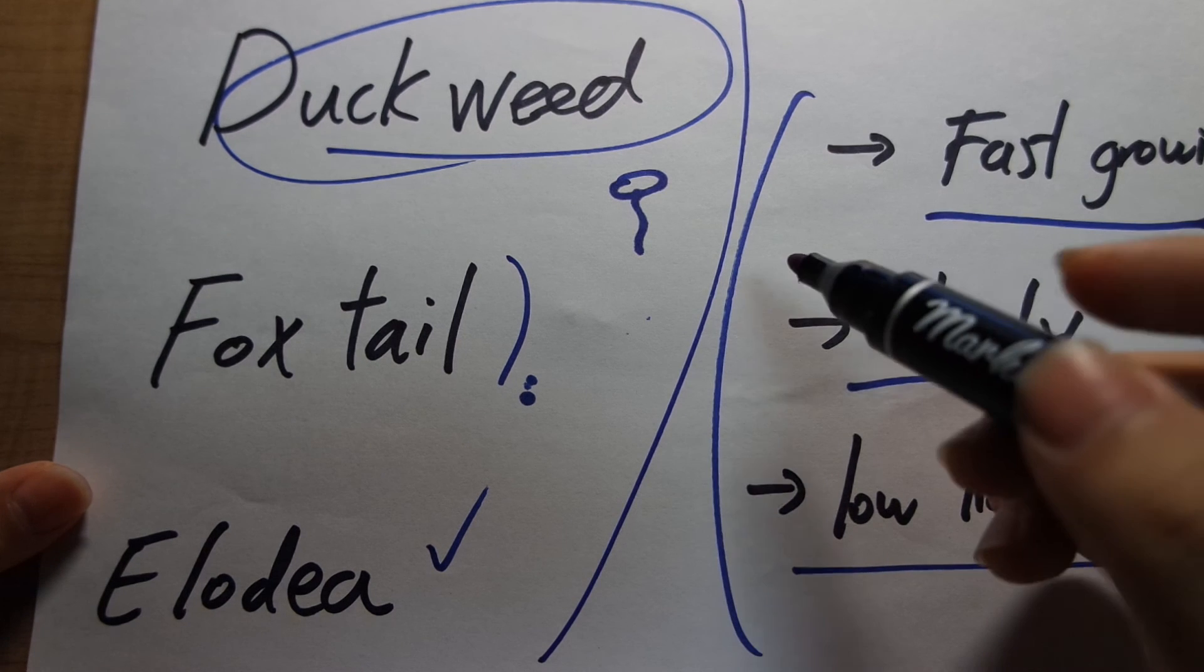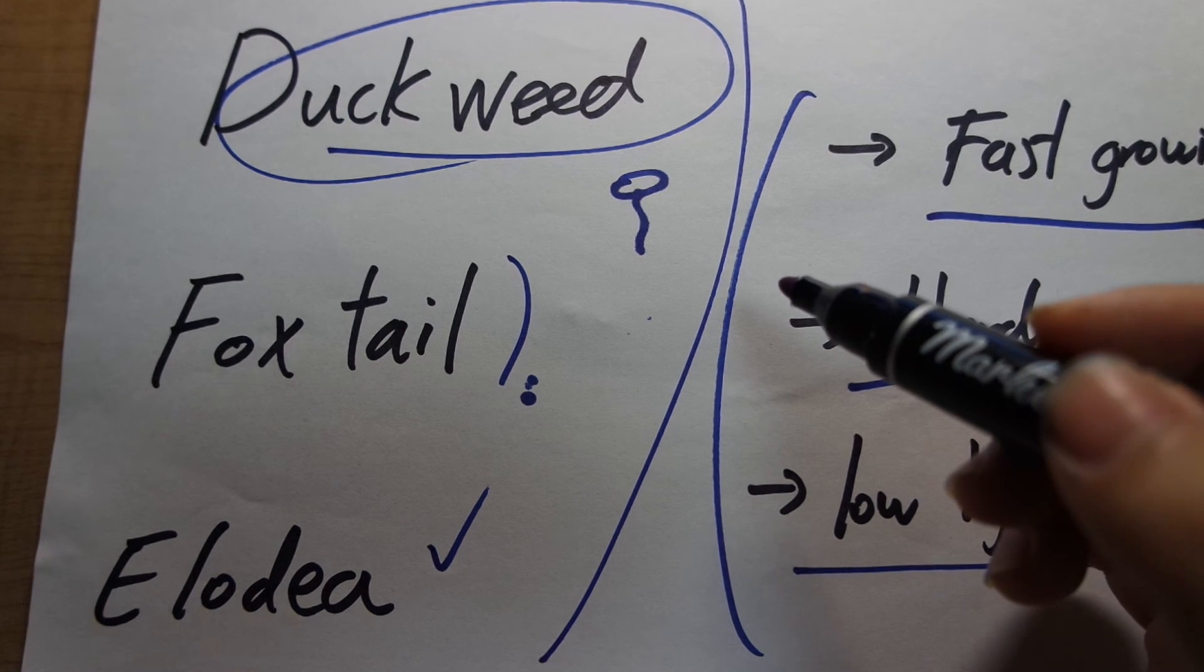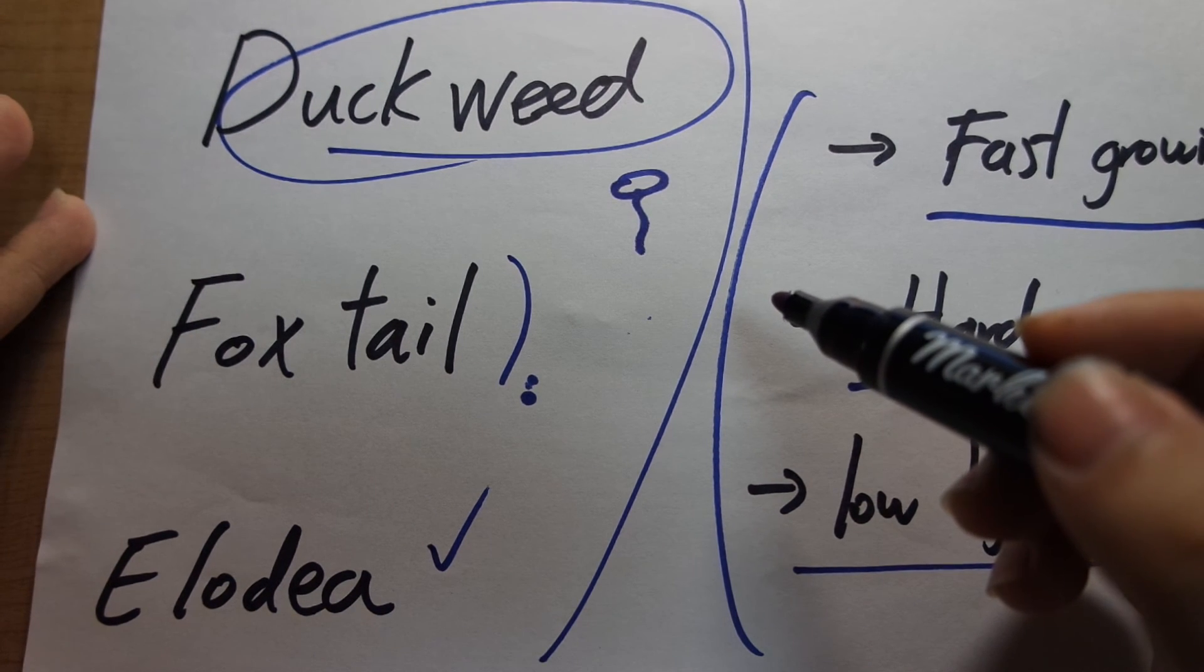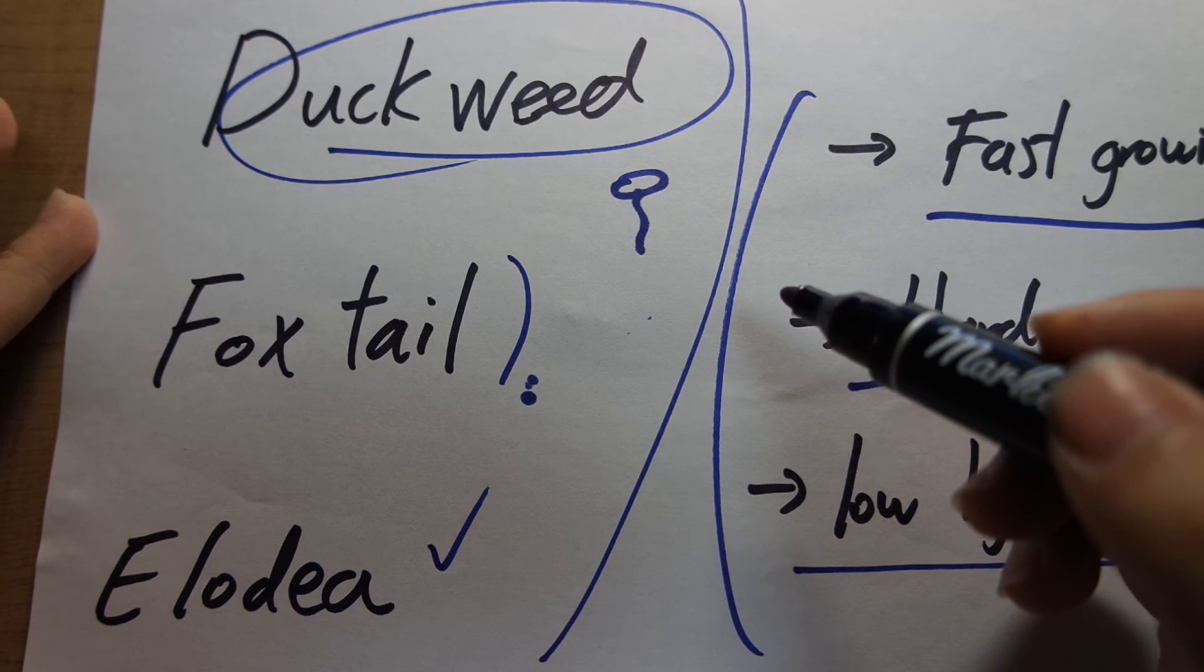So these are the three plants that if you don't know what to get and you want some plants for filtration purposes, these three you can get. And another great thing about these three is they're not really toxic. So if you have fish that are capable of eating plants, like goldfish or like my aquatic turtles,